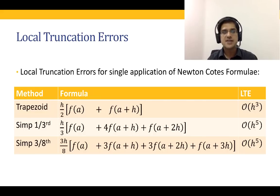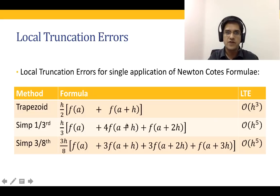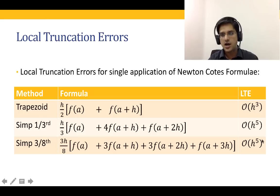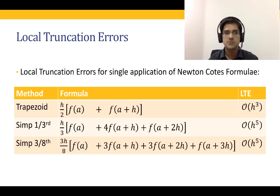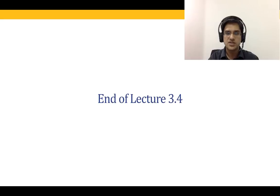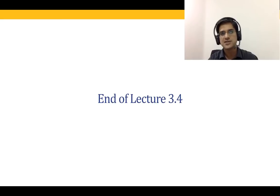This slide summarizes what we have covered in today's lecture: the trapezoidal rule and Simpson's one-third rule. The trapezoidal rule is h³ accurate. As a practice problem, you may want to verify that Simpson's one-third rule is h⁵ accurate — it follows the same procedure we used here. With that, I come to the end of lecture 3.4. Thanks and bye.